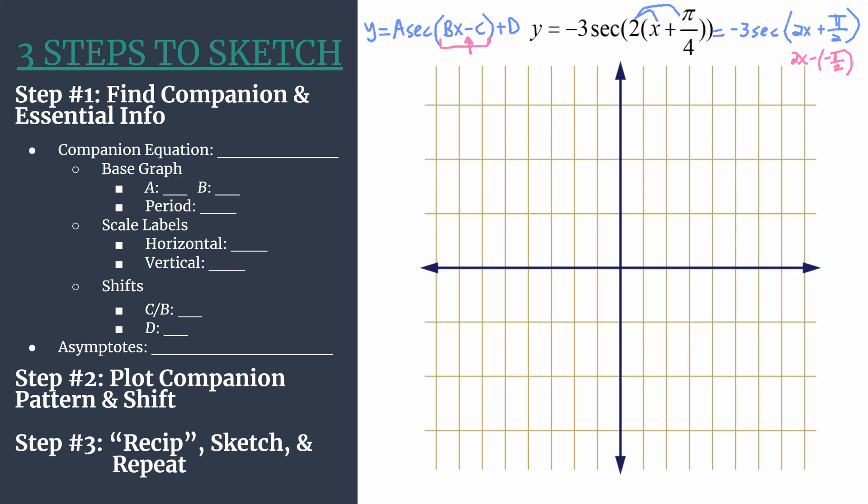Now let's dig into step one. We're going to find our companion equation and all of the essential information that goes with it. The companion equation is just going to be the cosine equation. So simply take your equation and rewrite it with cosine in place of secant. I'll do it in that distributed form, y equals negative 3 cosine of 2x plus pi over 2, and remember we have that notation in pink to help us remember the value for term c.